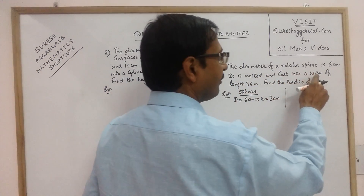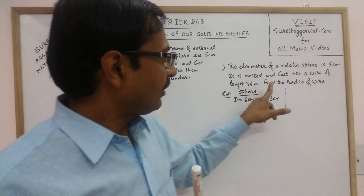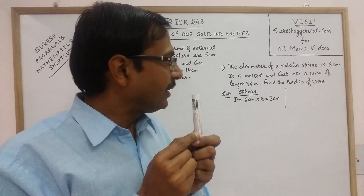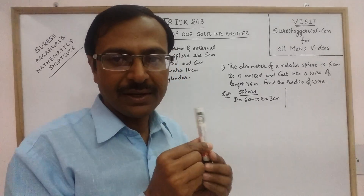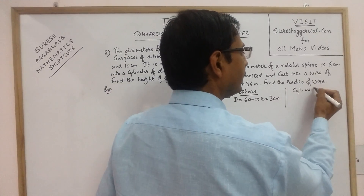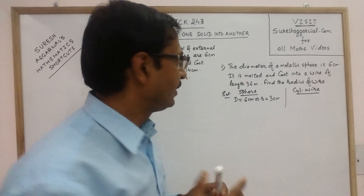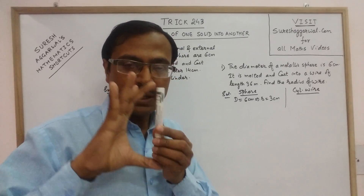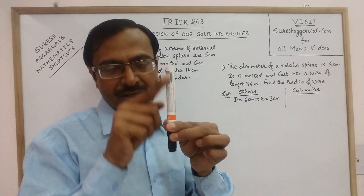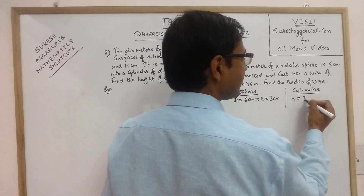The sphere is melted and cast into a wire. What is the shape of a wire? We have to find the radius of the wire, so the cross section is a circle and the length of the wire is given. The wire is a cylinder. The dimensions of a cylinder are its radius and its height. The length is 36 meters — length of the wire is actually the height. So height is 36 meters.